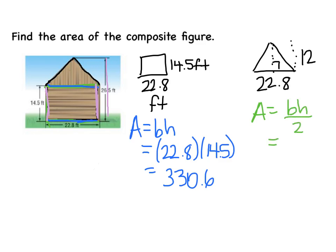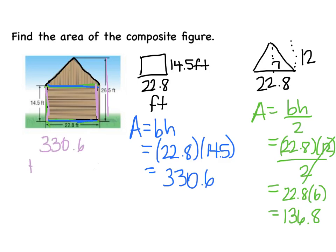So the base of the triangle is 22.8 times the height of the triangle is 12 all divided by 2. Here's a trick. I could say 12 divided by 2 right off the bat. And I could say 22.8 times, well, what's 12 divided by 2? 6. Or you can multiply and then divide by 2. It doesn't matter. And you get 136 and 8 tenths. Now I have to combine those. Don't forget to combine. So 330 and 6 tenths plus 136 and 8 tenths. And the combined area is 467 and 4 tenths millimeters squared.